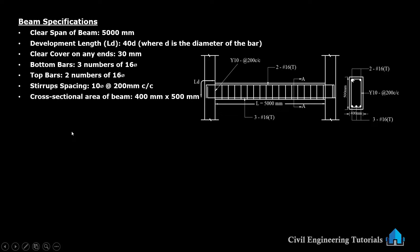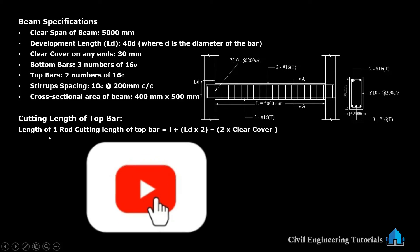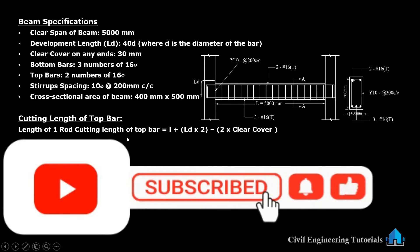Cross sectional area of beam: 400 mm into 500 mm. So this is 400 and this is 500 mm. Now, cutting length of top bar — first you have to calculate the cutting length of top bar. This is the top bar.